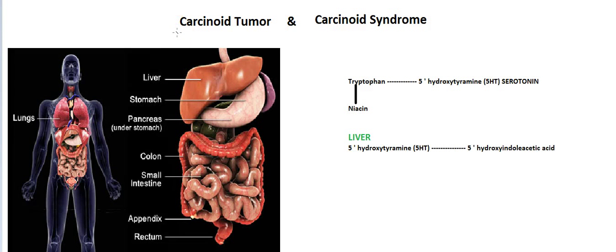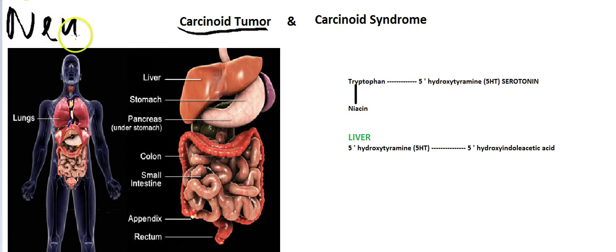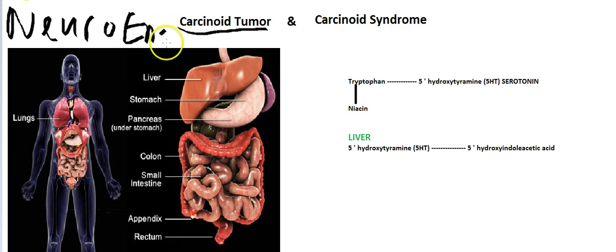Hi guys, this is EZS123 and today we are going to talk about carcinoid tumor and carcinoid syndrome. So what is a carcinoid tumor? Carcinoid tumor is a neuroendocrine tumor which has undergone malignant transformation, but the good thing is this malignant transformation it has gone through is low grade.